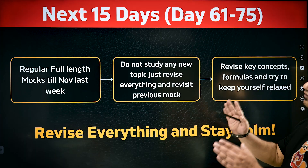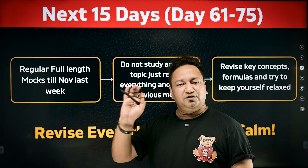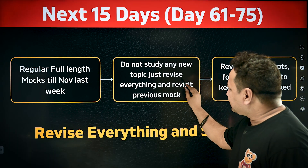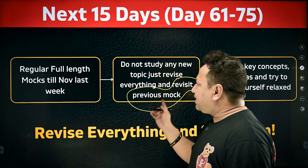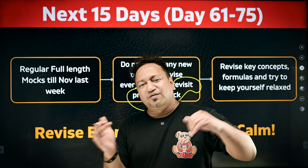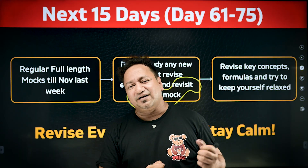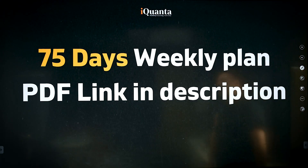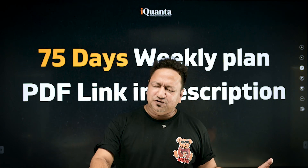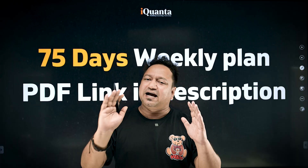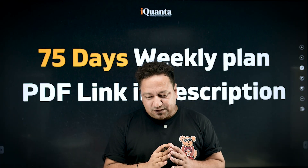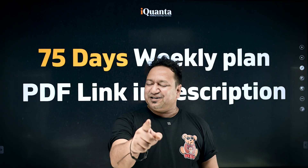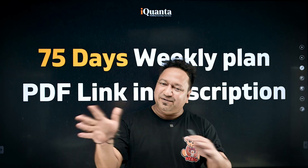The final 15 days, day 61 to 75: take regular full-length mock tests every day till the last week of November. Do not study any new topic — just revise everything and revisit previous mocks. Revisiting is important because there might be questions you weren't sure about earlier, and after more mocks you'll gain clarity. Go back, relax, understand what you did wrong, and rectify it. Revise key concepts, formulas, and keep yourself calm. Then comes CAT — wishing you all the luck to crack it with flying colors. A structured 75-day PDF plan is available in the description. Happy cracking CAT!